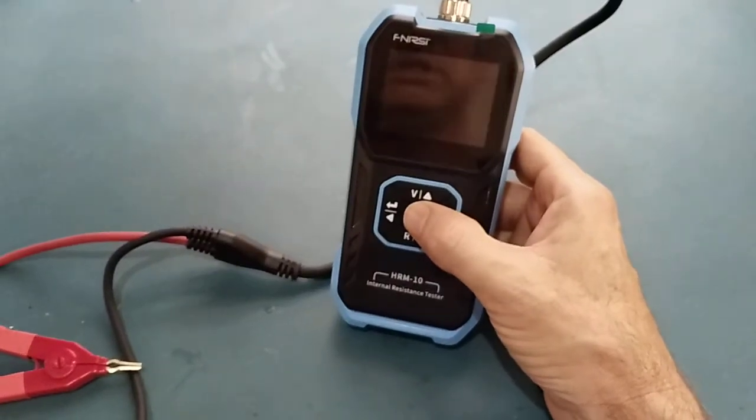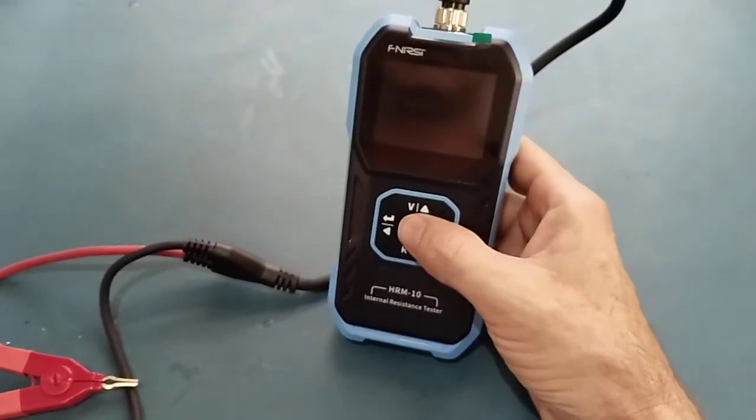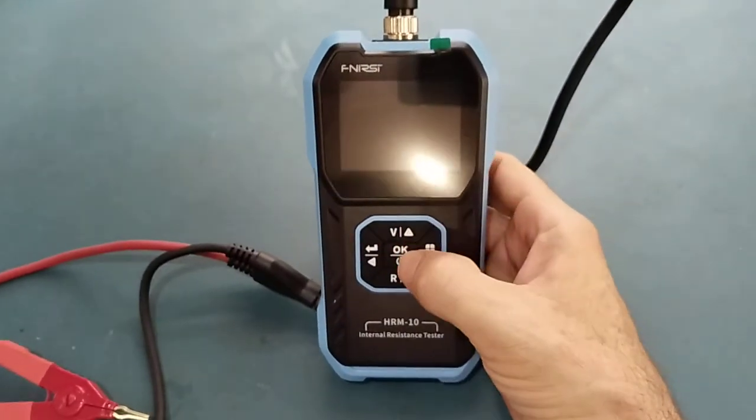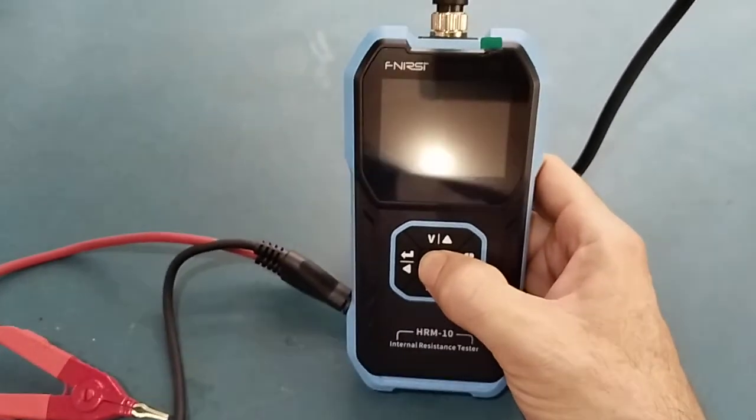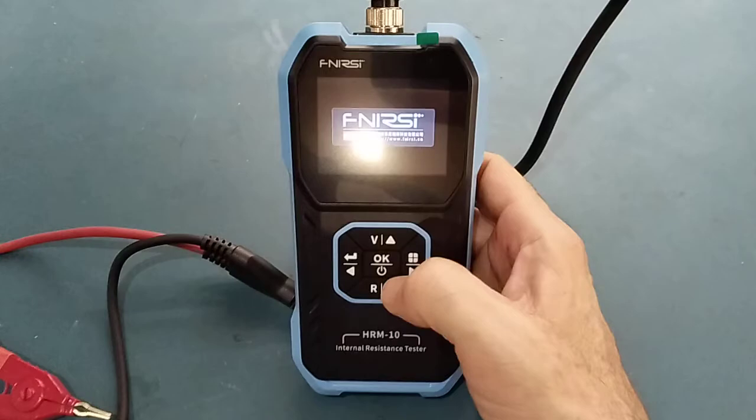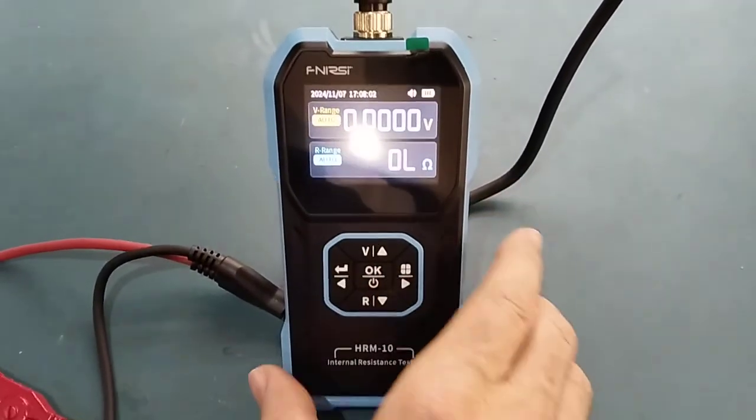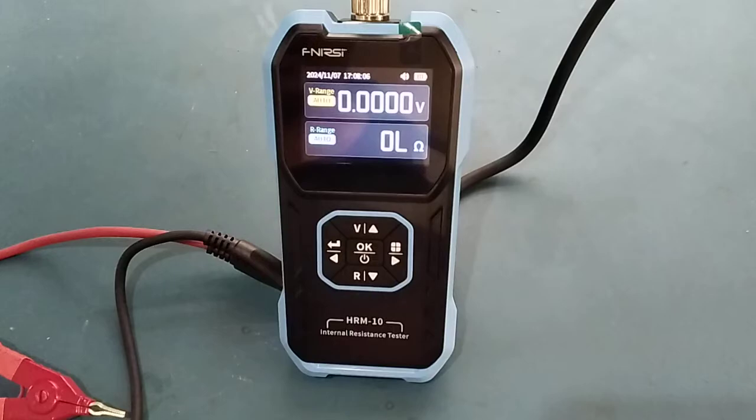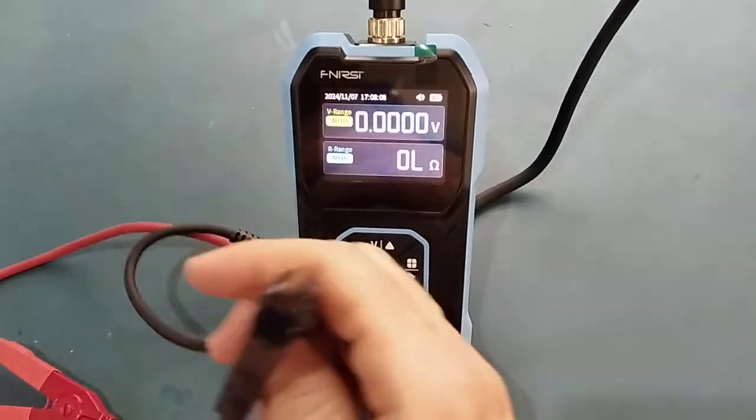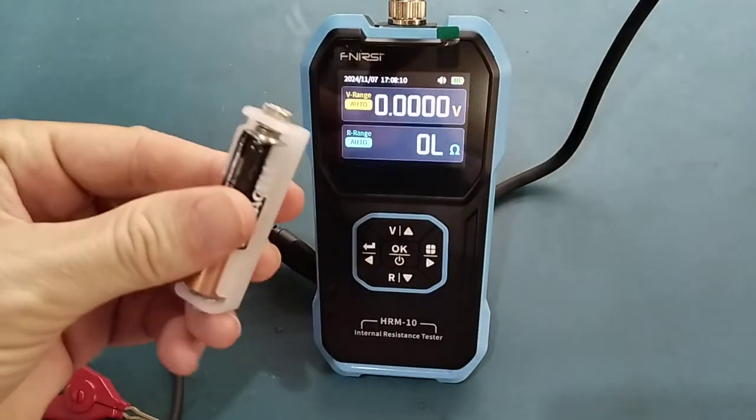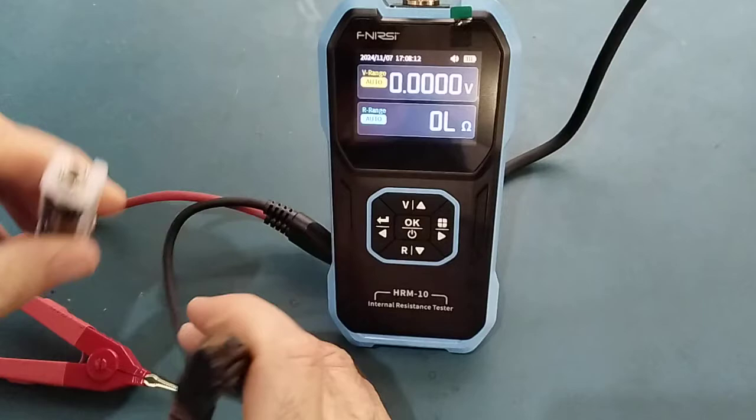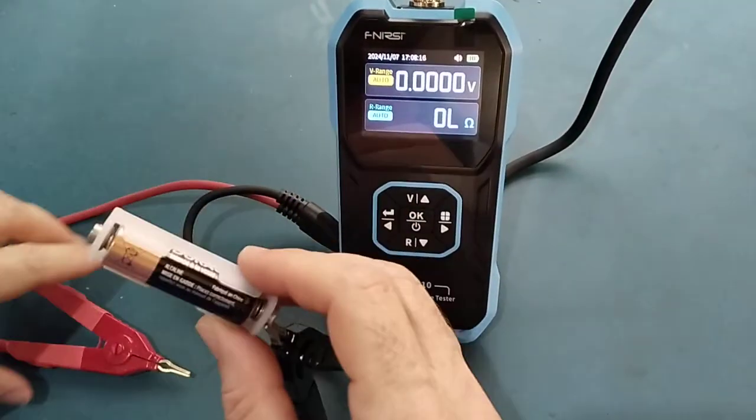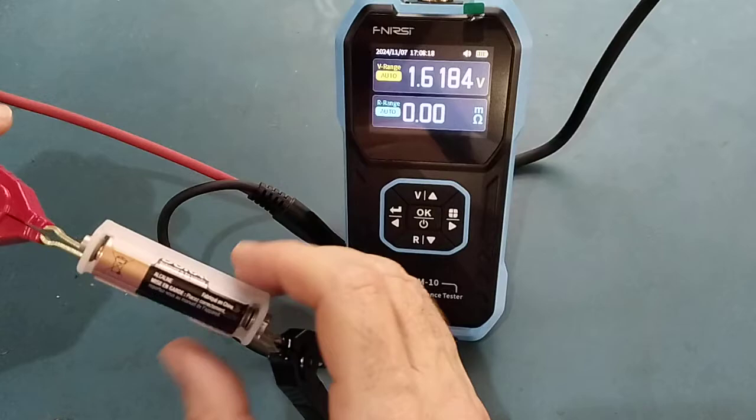The FNRSI HRM10 is a portable, battery-powered internal resistance tester. I'm going to test first a pen light battery. Connect negative to negative, positive to positive, and there, as you can see...